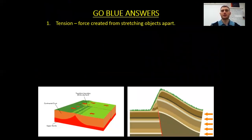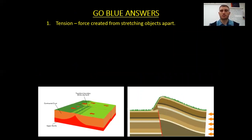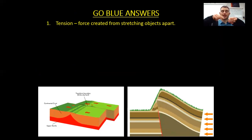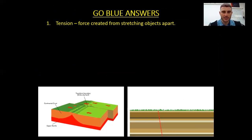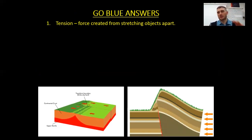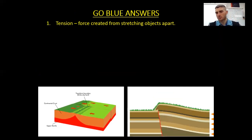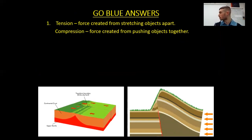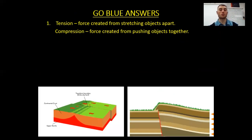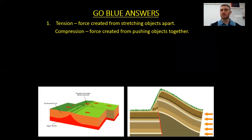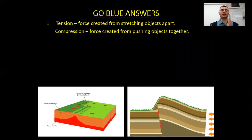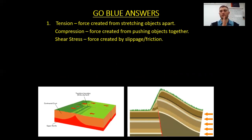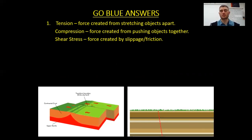First and foremost: tension is the force created from stretching and pulling objects apart. Like a string being pulled apart — that is tension. A lot of people mix this up on the test. Compression is the force you create when you push things together. And lastly, shear stress is like rubbing your hands together — it's the force created by slippage or friction of objects.